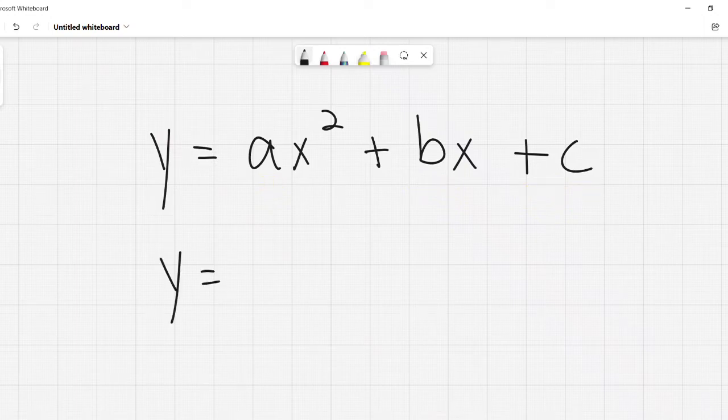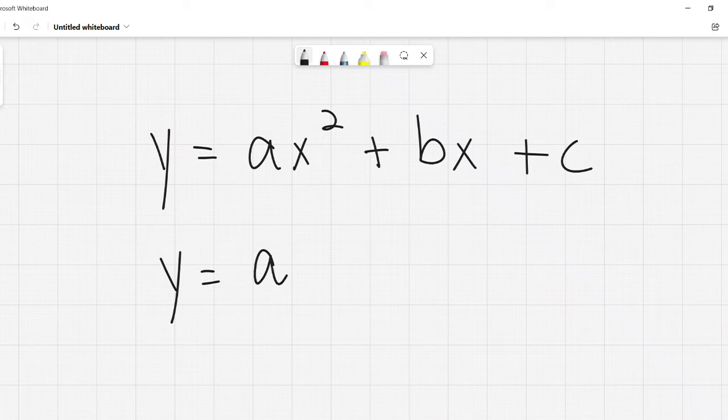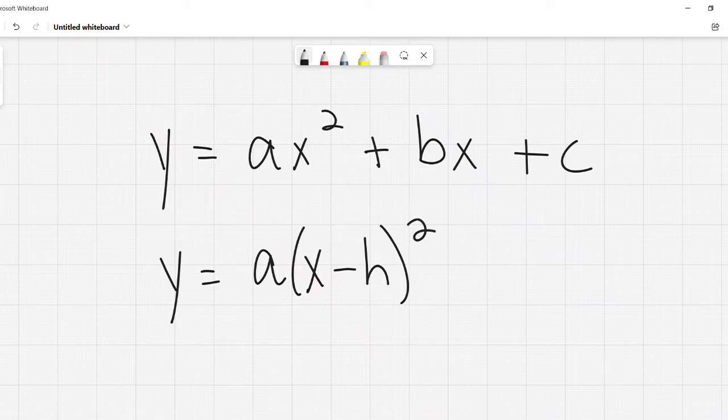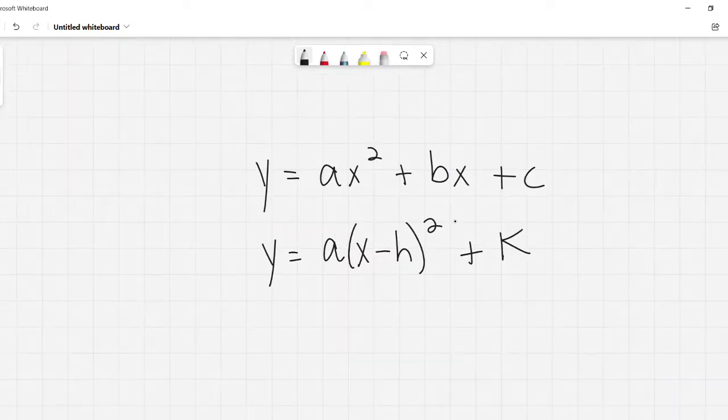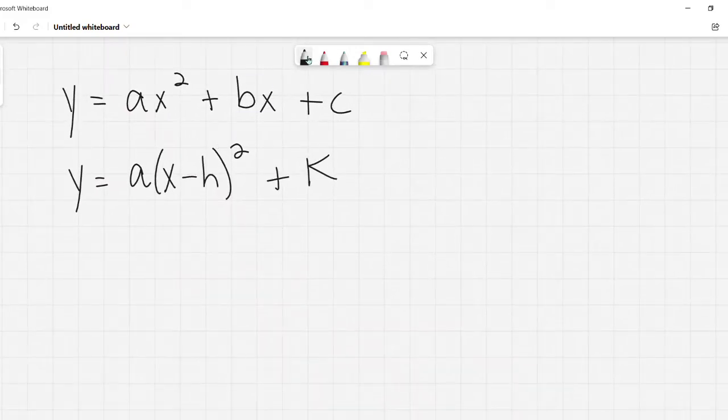Vertex form is this: a times x minus h squared plus k. Okay, like, oh, goody, more letters. Vertex form is called vertex form because it tells you where the vertex is. Shocking, I know, right? I bet you never would have guessed that.